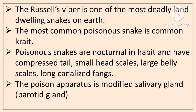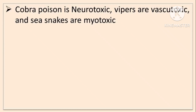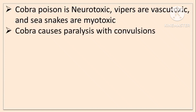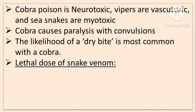The poison apparatus in poisonous snakes is a modified salivary gland, also called a modified parotid gland. Cobra poison is neurotoxic, Vipers are vasculotoxic or hemotoxic, and Sea Snakes are myotoxic. Cobra causes paralysis with convergence, and the likelihood of a dry bite is most common with Cobra — it bites but does not inject venom.